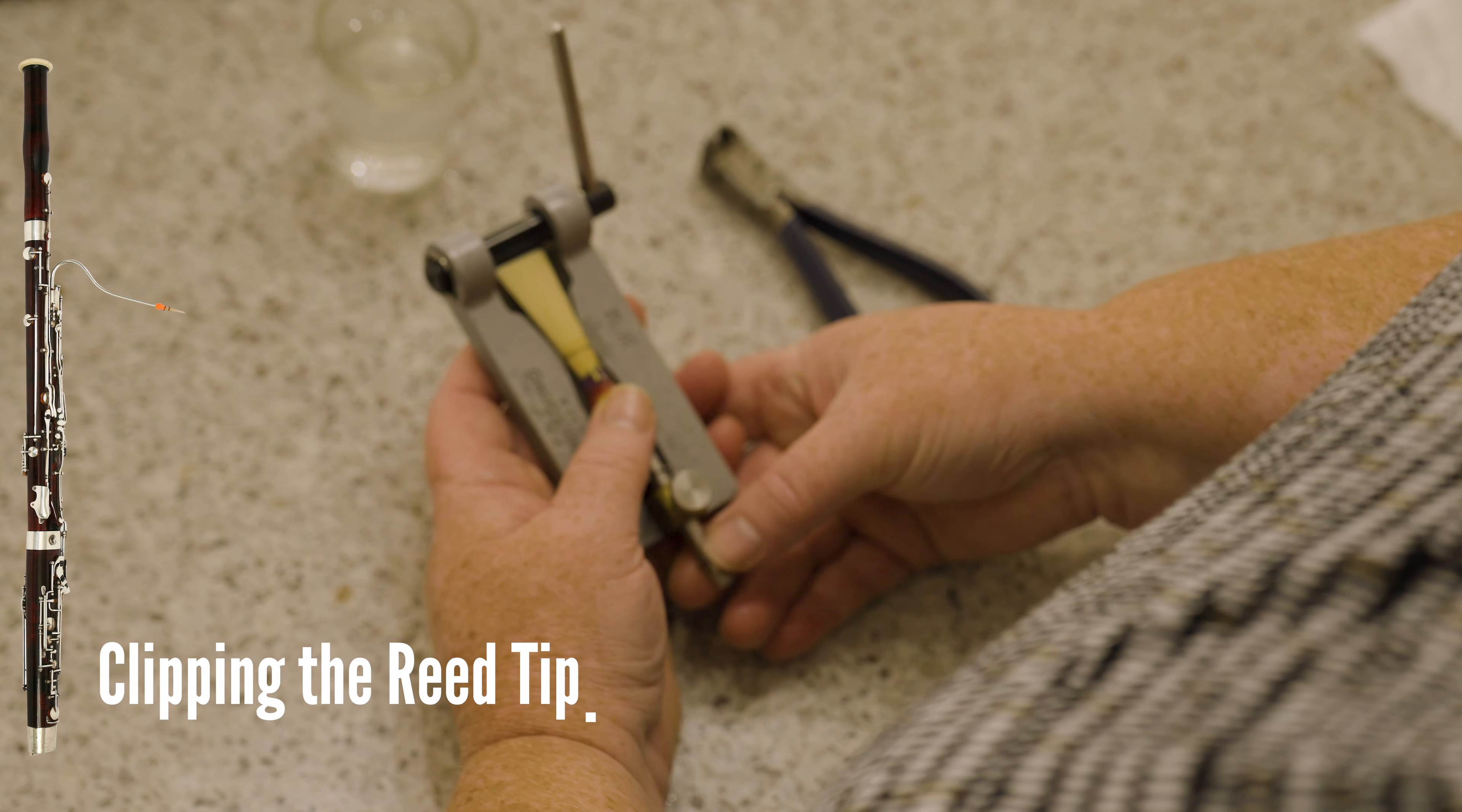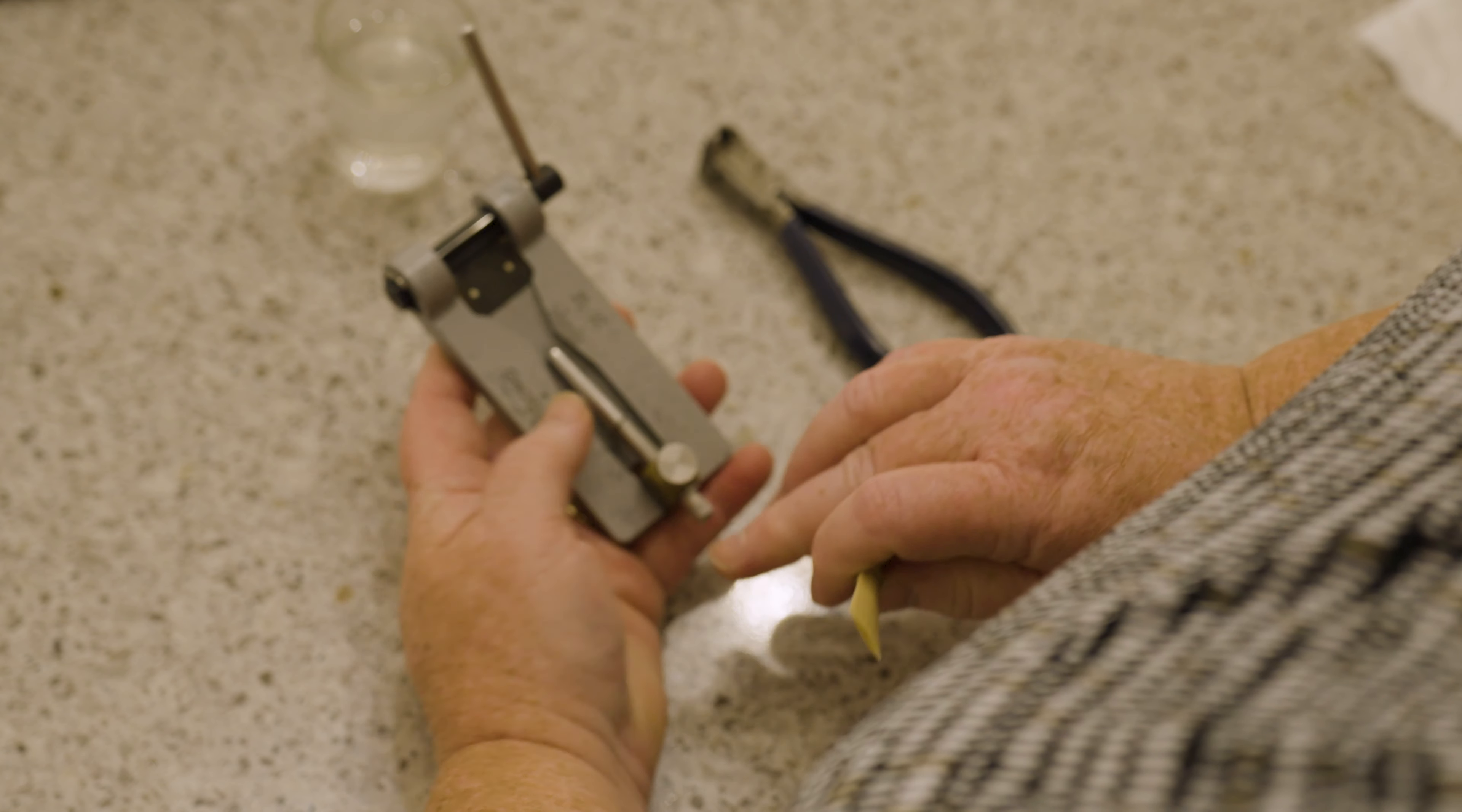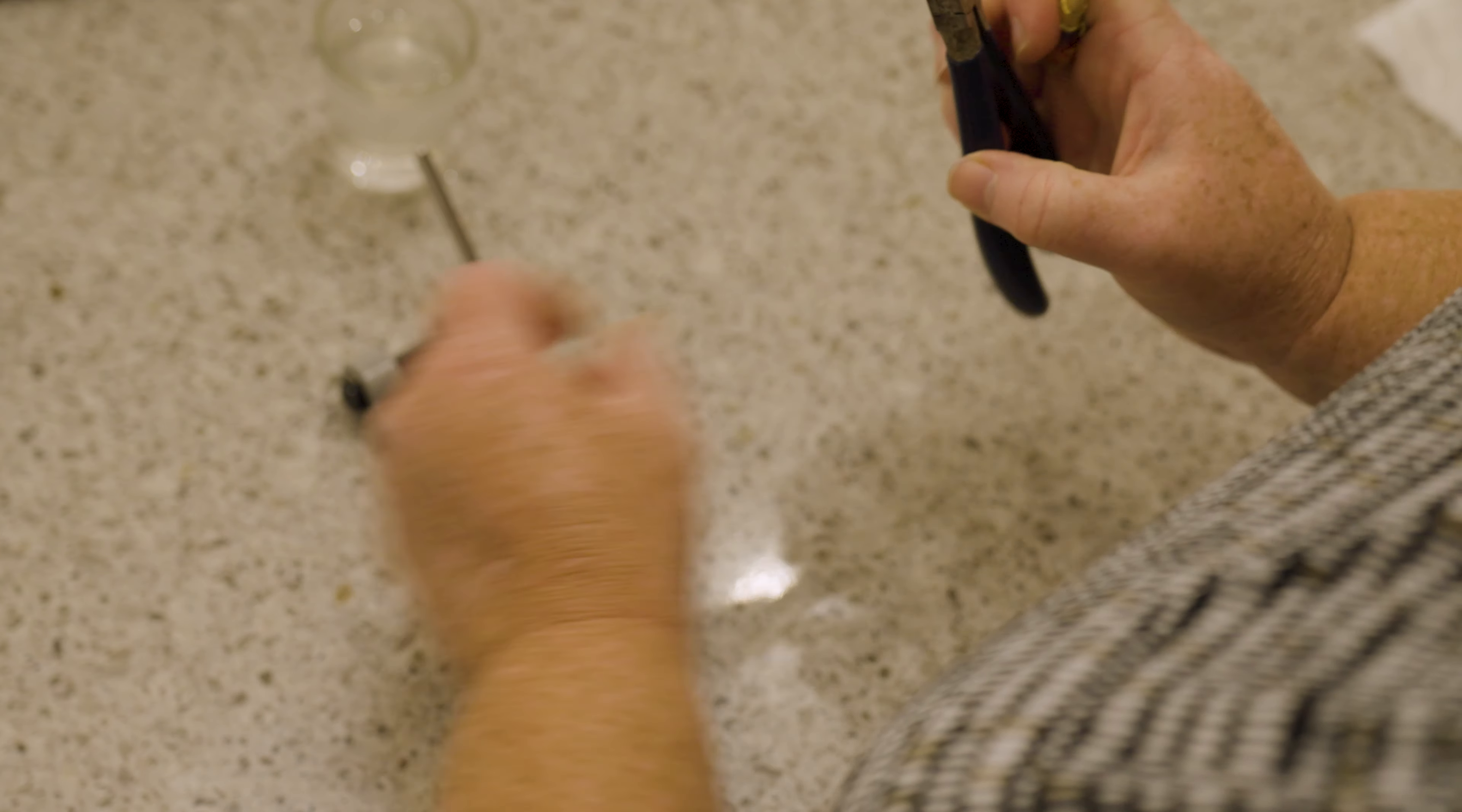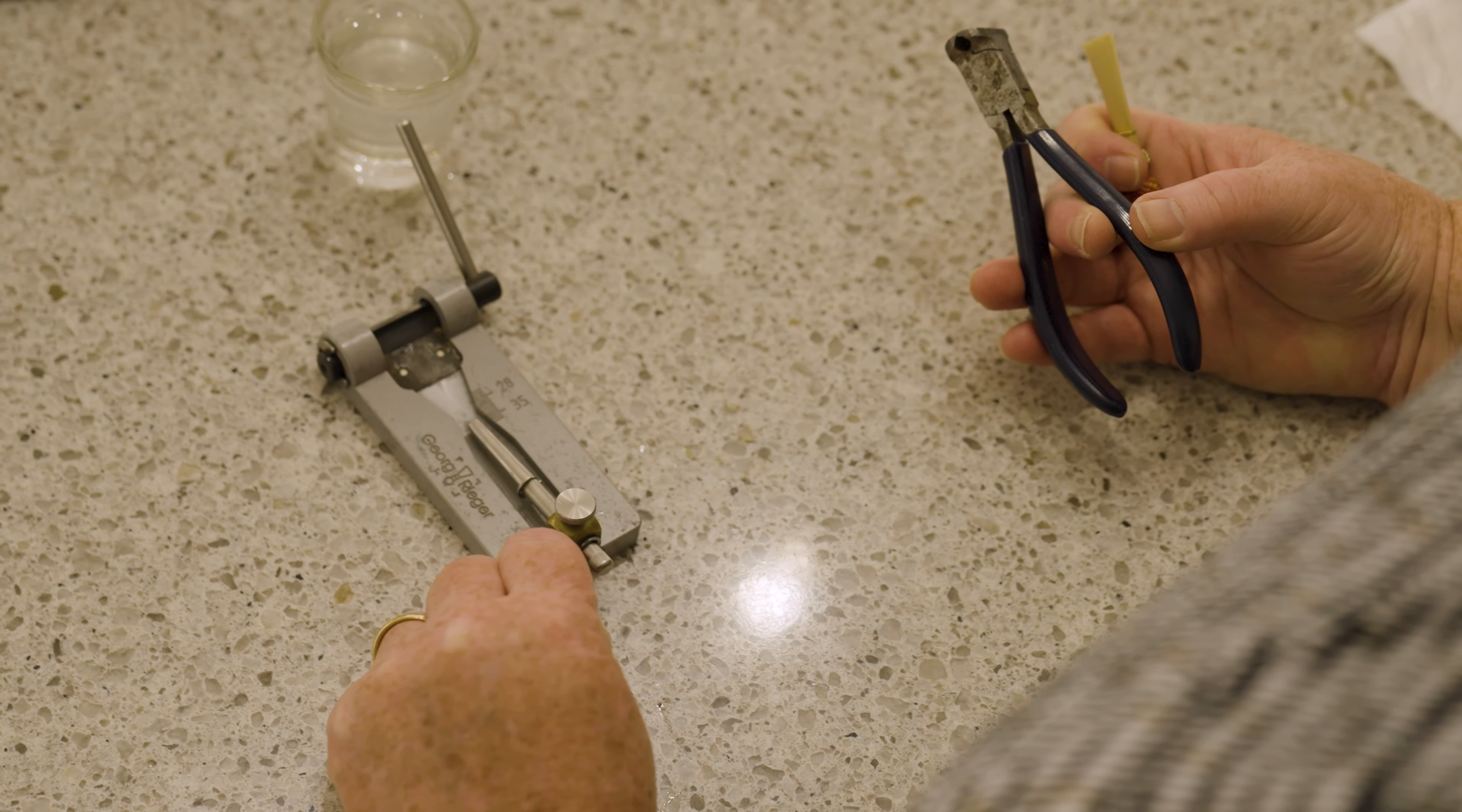If you need to clip the tip of your reed, you have two tools that you can use. This is a tip cutter, and these are end nippers. These are much less expensive, about $50, and this is probably about $250.